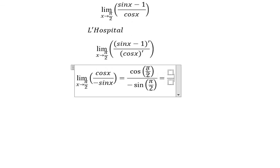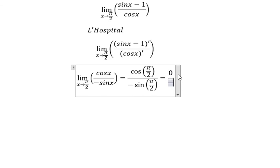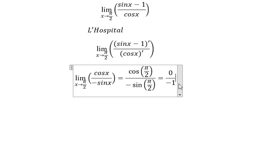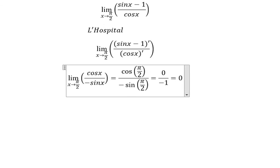So cos of π/2, you get 0, and sin of π/2, you get 1, and we have negative 1. So you get 0 over negative 1, which equals 0. So the answer is 0. Thank you.